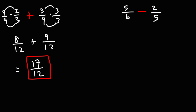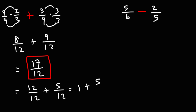If we want to, we can convert this to a mixed number. 17 over 12 is 12 over 12 plus 5 over 12. 12 divided by 12 is 1, so we have 1 plus 5 over 12, which is 1 and 5 twelfths as a mixed number.